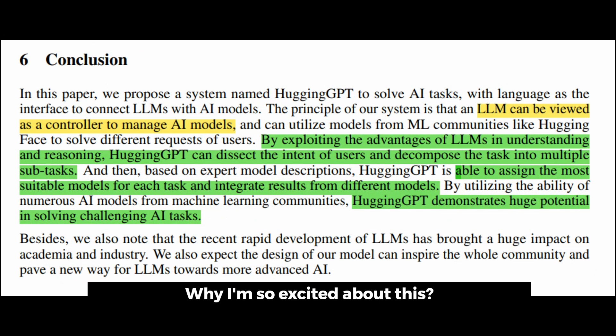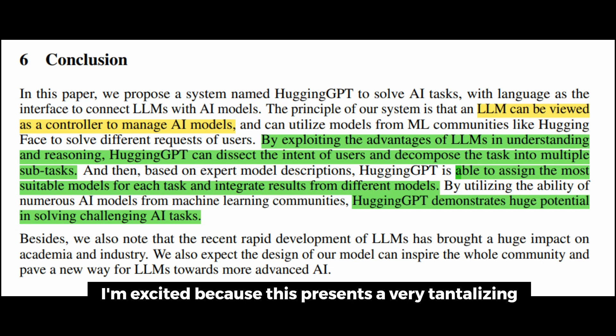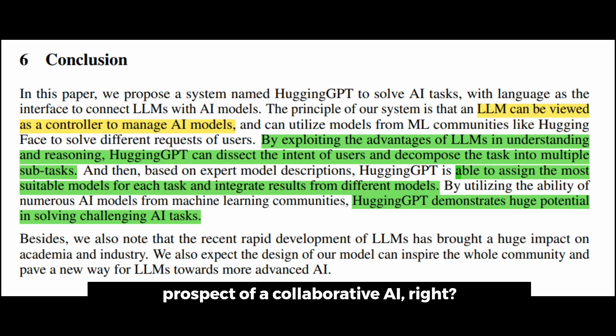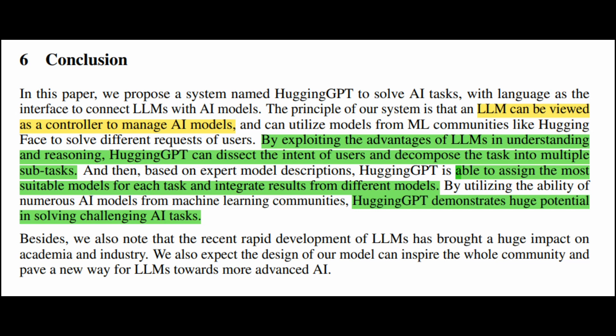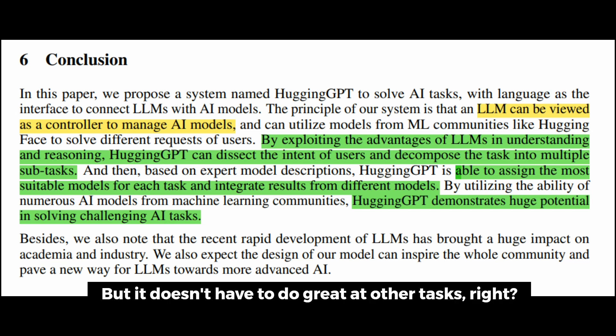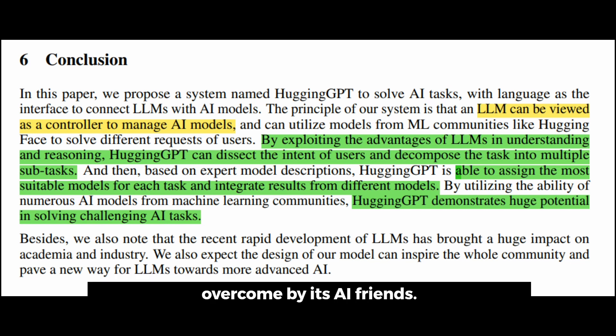So why am I so excited about this? I am excited because this presents a very tantalizing prospect of a collaborative AI. We could create specialized AIs that work in conjunction for improved outcomes. A central LLM would control these AIs, communicate with us, and excel at understanding human requests. But it doesn't have to be great at everything — it can have weaknesses, and those weaknesses can be overcome by its AI friends.